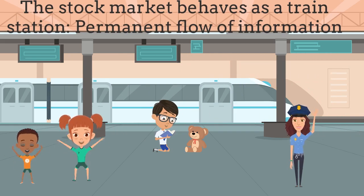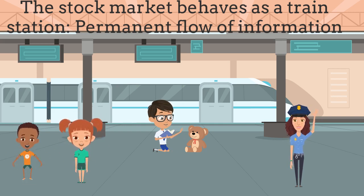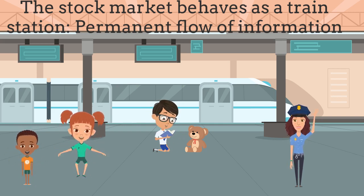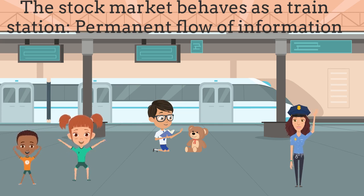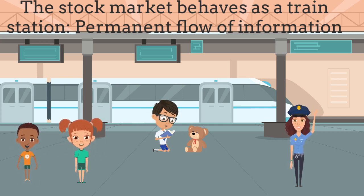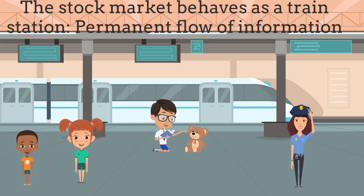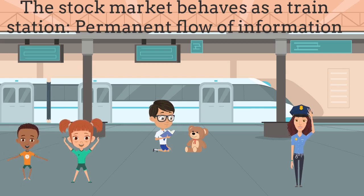This shouldn't be a surprise because the stock market is an open system where information is always entering and flowing out. Imagine a train station: the persons would represent the information flowing through the boundaries of the system, with a permanent flow of information that is not preserved at all.